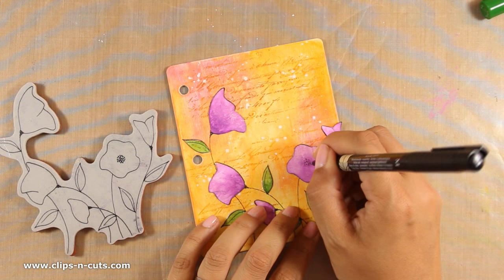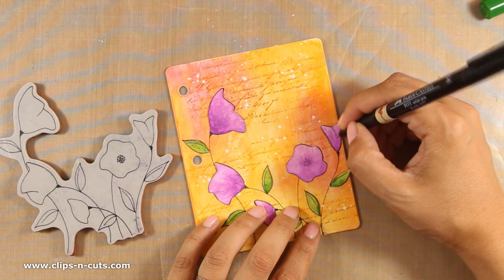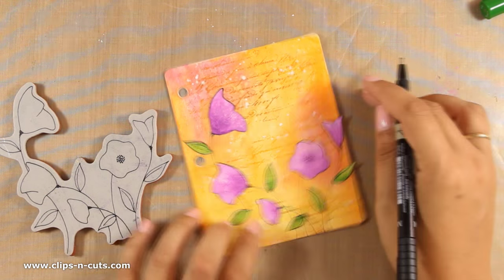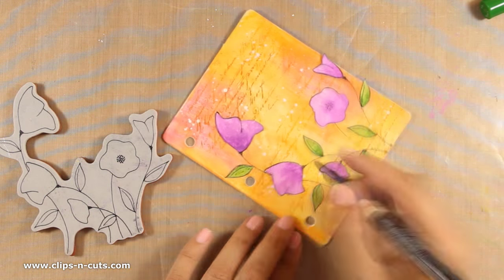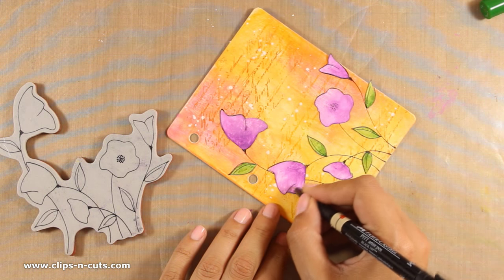I'm adding the dots at the center of this flower as well as some lines on the other flowers which I can barely see just below the layers of gelato.